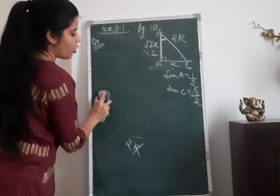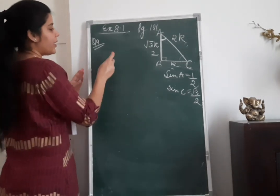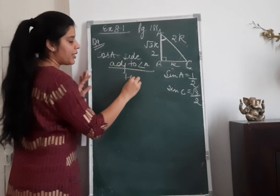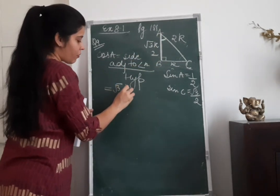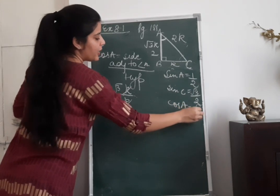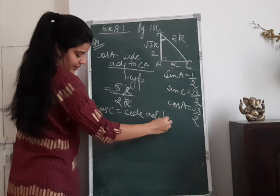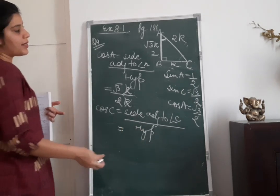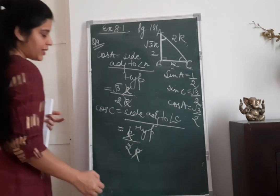Now let us find cos A and cos C. Cos A equals side adjacent to angle A upon hypotenuse. The side adjacent to angle A is root 3K, so root 3K upon 2K. K and K cancel, giving cos A equals root 3 by 2. Now cos C equals side adjacent to angle C upon hypotenuse. The side adjacent to angle C is K, and hypotenuse is 2K. K and K cancel, giving cos C equals half.